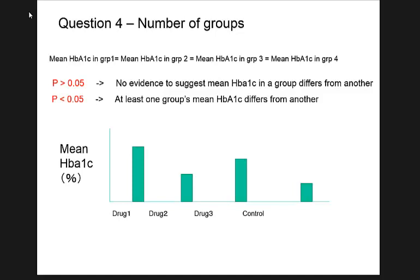ANOVA is used to avoid that inflation. The null hypothesis for ANOVA is that the mean outcome is the same across all groups simultaneously. If ANOVA p > 0.05, you conclude no evidence that any group differs. If p < 0.05, at least one group differs from another. With only two groups, you compute just one p-value, so there's no need for ANOVA.